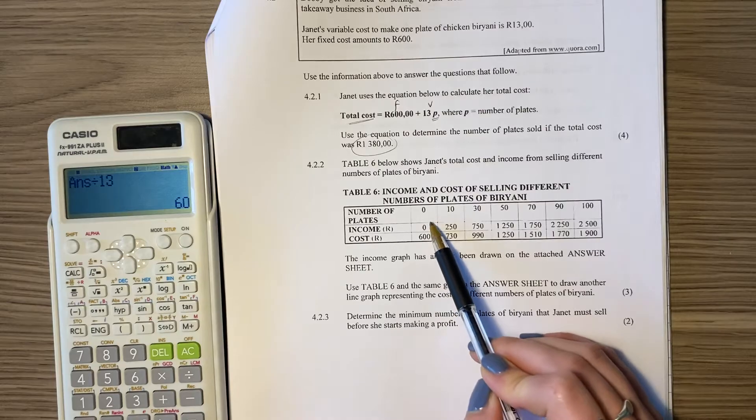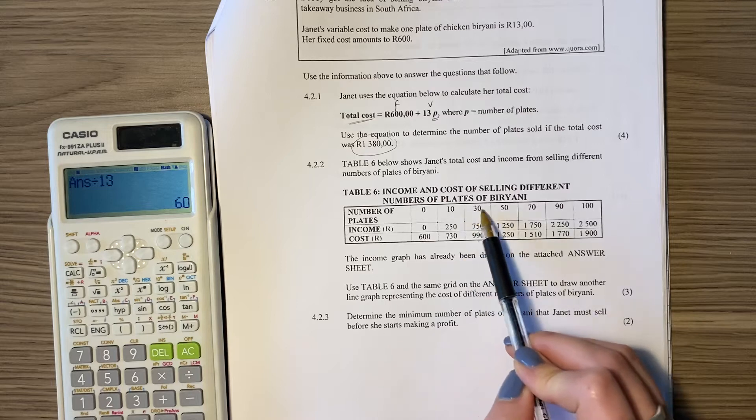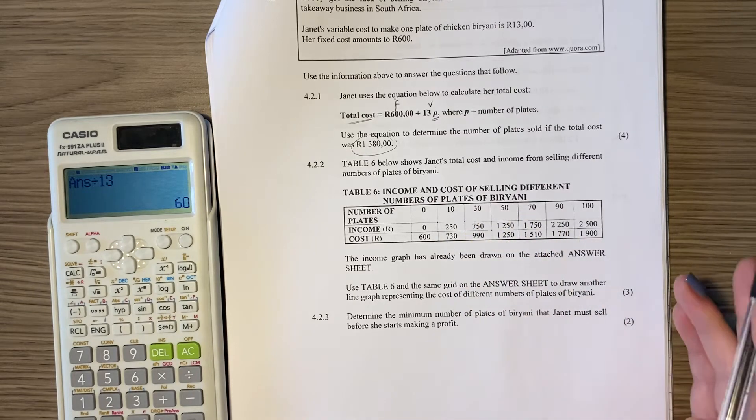So if she sells none there's no income. So she sells no plates, she gets no income. As she sells plates she starts getting income.